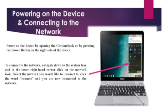Power on the device by opening the Chromebook or pressing the Power button on the right side of the device. To connect to the network, navigate down to the system tray in the lower right-hand corner and click on the network icon. Select the network you would like to connect to and click the word Connect. You are now connected to the network.